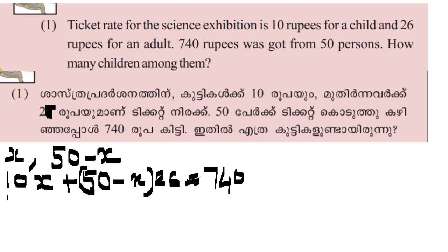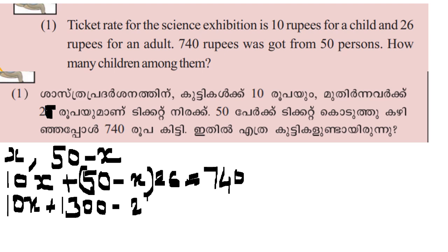Let's expand: 10x plus 50 into 26. 26 into 5 — 6 fives are 30, 2 fives are 10 — gives 1,300. So we have 10x plus 1,300 minus 26x equals 740.